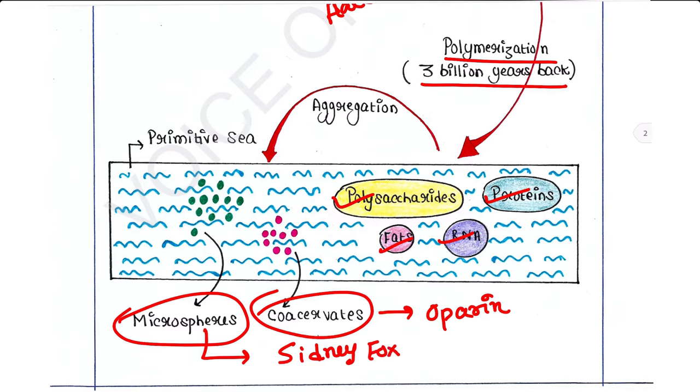Coacervates and microspheres are very tiny spherical structures, and they are microscopic. Coacervates are formed by the aggregation of lipids or fats, and microspheres are formed by the aggregation of proteins. So lipids formed coacervates and proteins formed microspheres by aggregation.